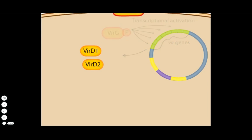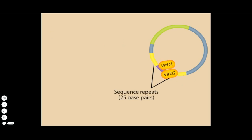The VIR-D proteins are endonucleases that cleave at the 25 base pair sequence repeats at the ends of the tDNA. As a result, the cell produces a single-stranded tDNA molecule attached to VIR-D2 at one end.